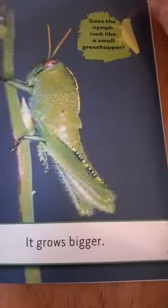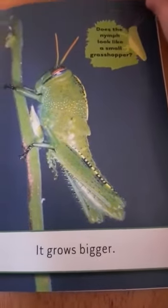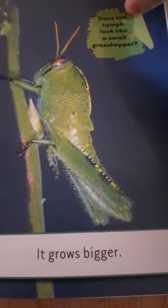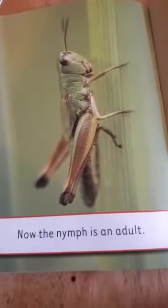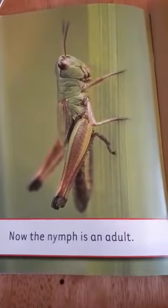The nymph eats leaves. The nymph grows bigger and it looks like a small grasshopper. The nymph wiggles out of its skin, and wings start to grow.